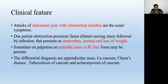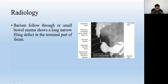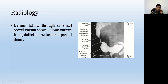The differential diagnosis includes appendicular mass, carcinoma cecum, Crohn's disease, tuberculosis of the cecum, and actinomycosis. You have to rule out all these conditions. Radiology is useful to diagnose the condition. On X-ray small bowel enema, you can see a long narrow filling defect in the terminal part of the ileum. Both the proximal and distal parts of the intestine get dilated because only the affected hyperplastic part has a narrowed lumen while the other parts are normal.